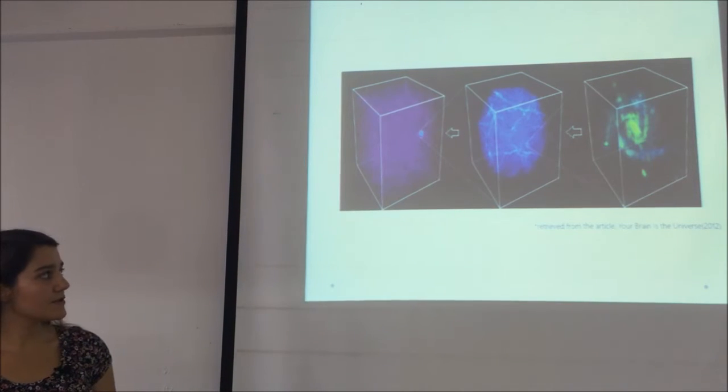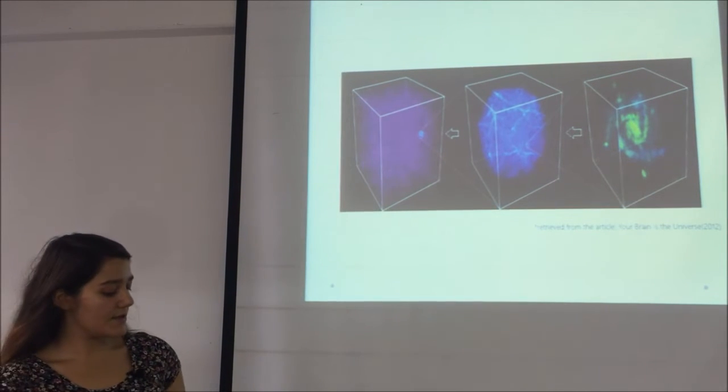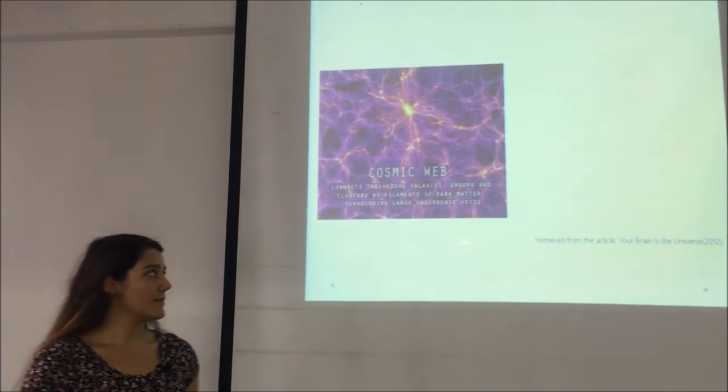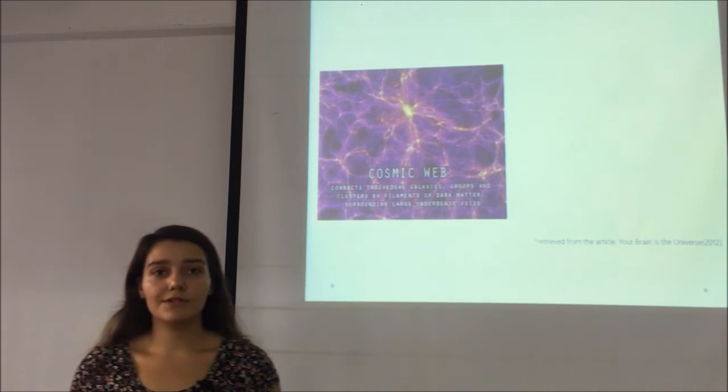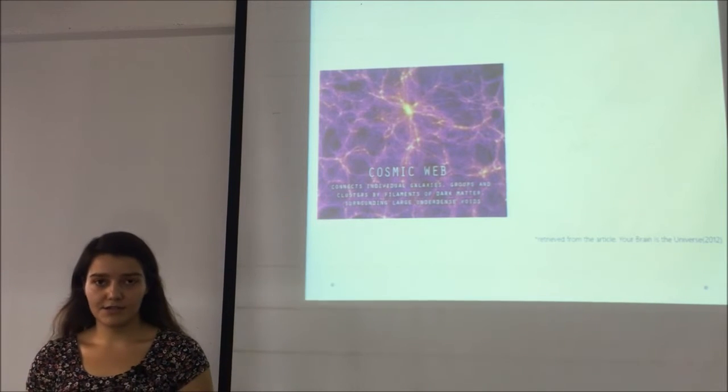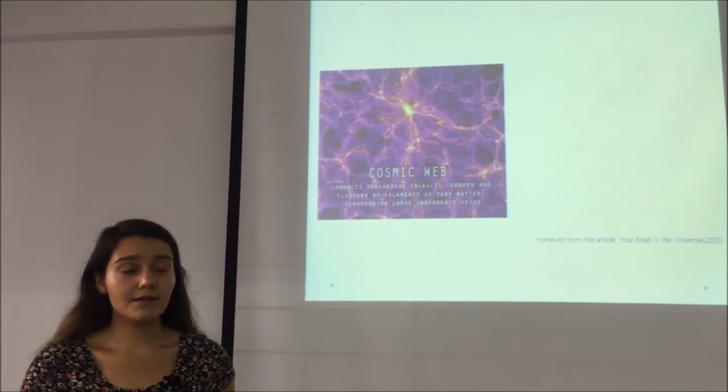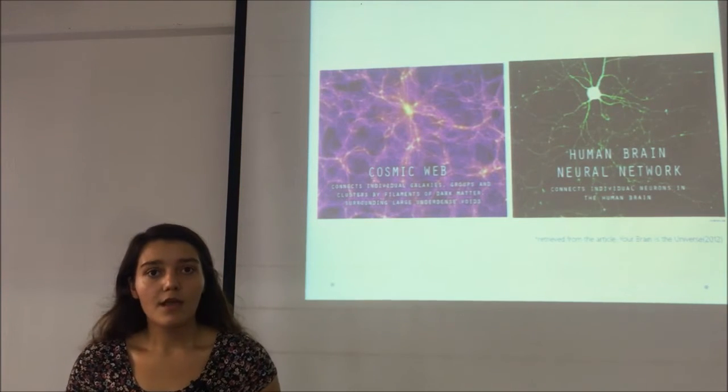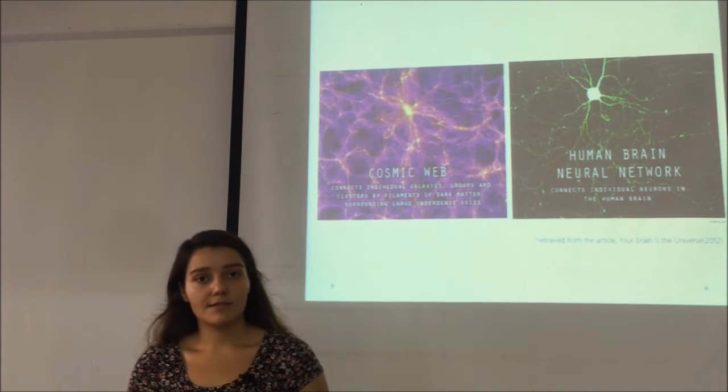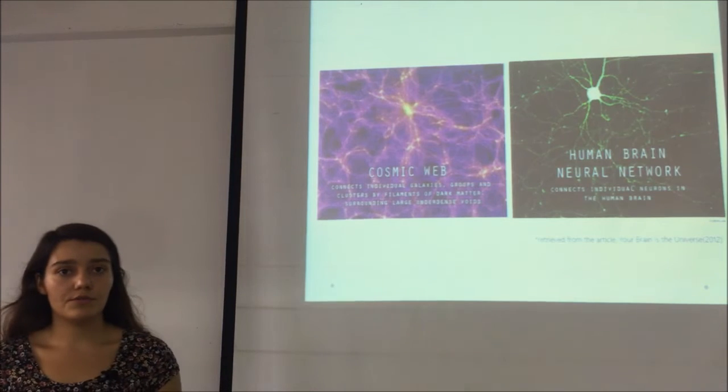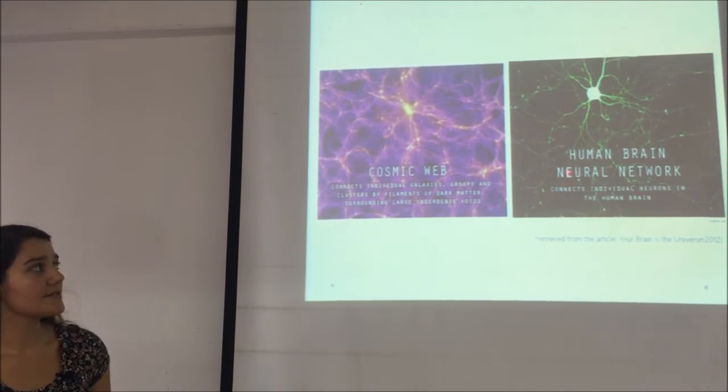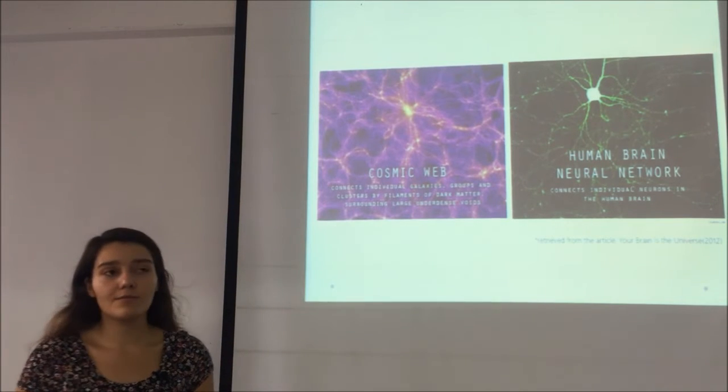These pictures are the visual representations of his results. The connection between the galaxies is called the cosmic web. It connects individual galaxies by electromagnetic interactions. On the other hand, in our bodies, the system is called the human brain neural network. It connects individual neurons in human brain. I think we all can agree that these two systems both look and sound almost the same.